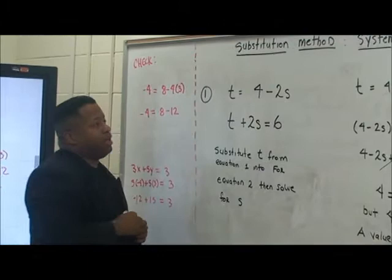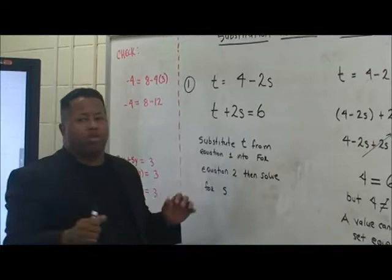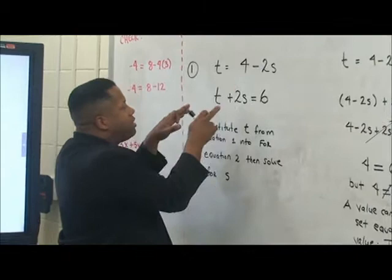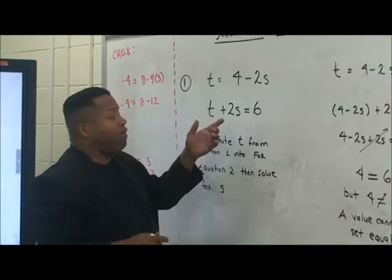t equals 4 minus 2s for equation 1, and t plus 2s is equal to 6 for equation 2. What we want to do is solve for t if necessary — in this case it's already solved for us — and we can take this expression, since t is set alone, and plug it into this equation for t. Then we simplify by distributing, grouping like terms, and solving for the other variable, which in this case is s.